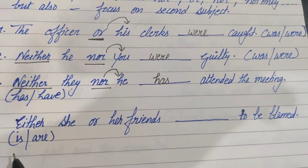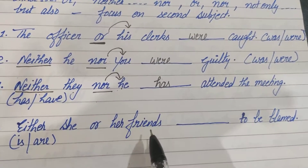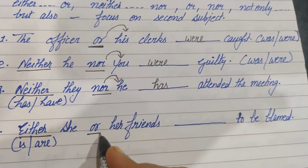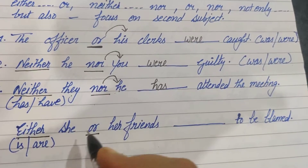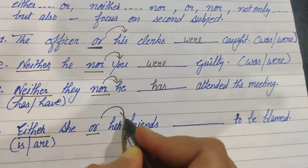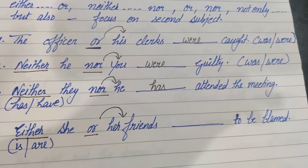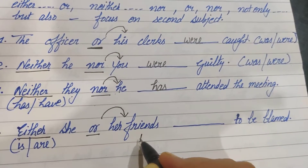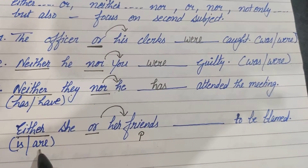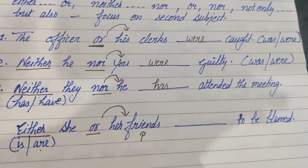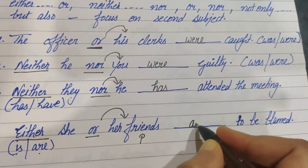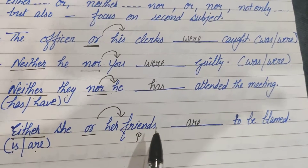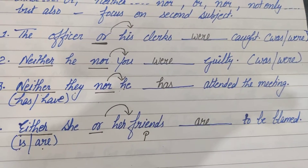'Either she or her friends.' The joining words are 'either...or', so we focus on the second subject. The second subject is 'her friends', which is plural. So we pick 'are': Either she or her friends are to be blamed.